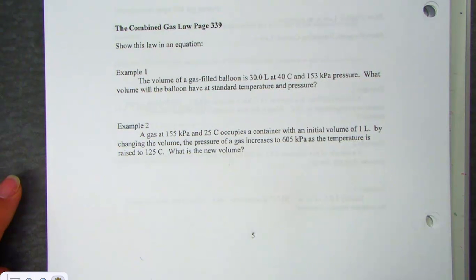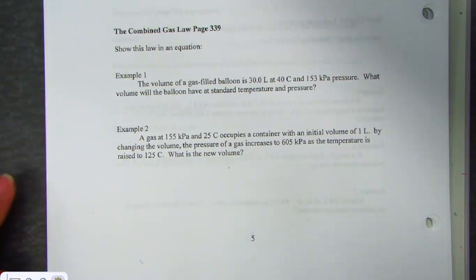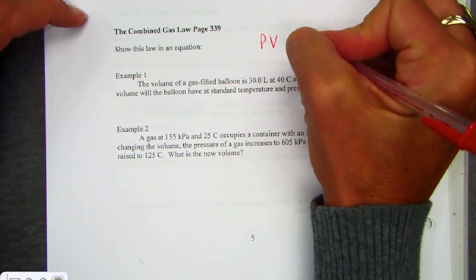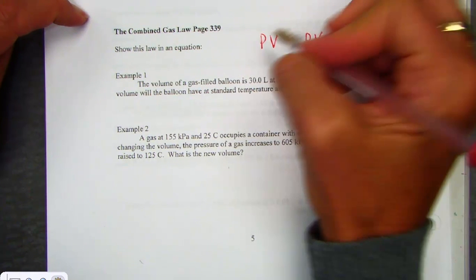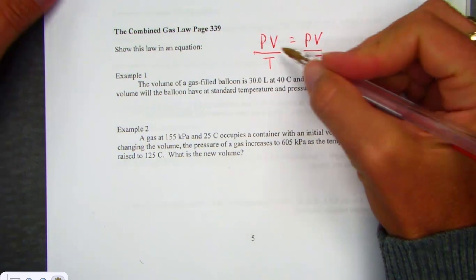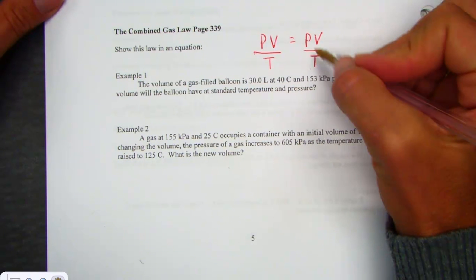The Combined Gas Law takes an opportunity to do Boyle's Law, which we know is an inverse relationship, PV equals PV. Charles's Law, V over T equals V over T. And Gay-Lussac's Law, with P over T equals P over T.